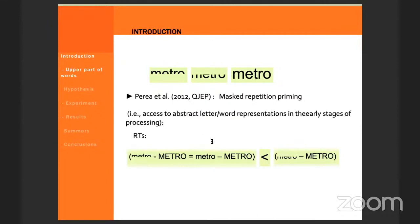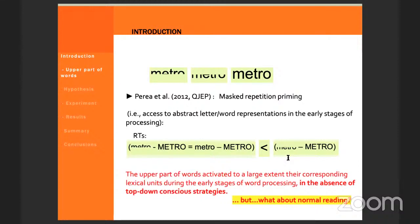A few years ago, Perea and colleagues in 2012 used the masked repetition priming technique to try to address the locus of this advantage. Note that in the masked priming technique, the prime is presented for less than 50 milliseconds, but it does affect the processing of the target while the participant is not aware of it. This is a very safe way to measure bottom-up processing while avoiding strategic decisions from the participant.